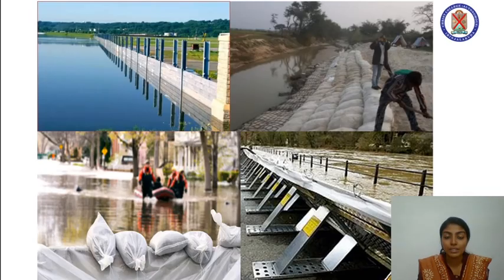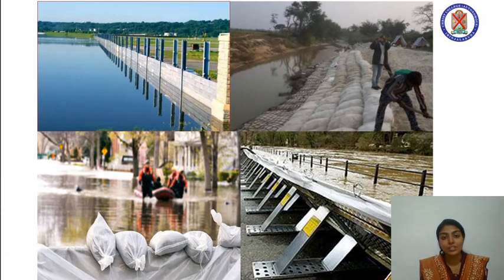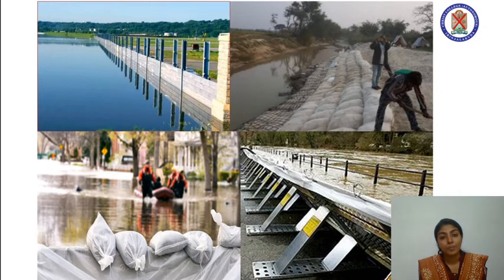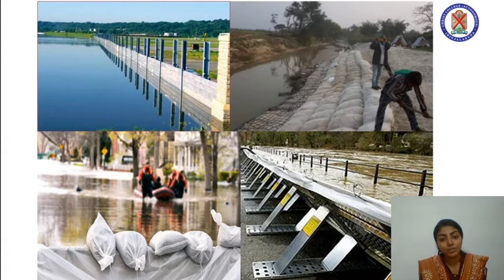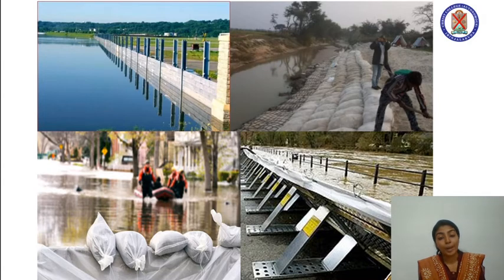Long-term measures include constructing flood control structures like flood walls and revetments, and land-use regulations. Medium-term measures include riverbank protection, anti-erosion works, and river training. Short-term measures include assessment of vulnerability of flood control structures, floodplain zone mapping, and so on.